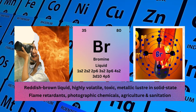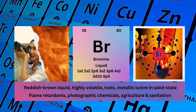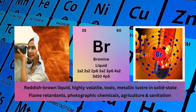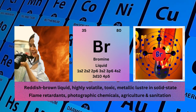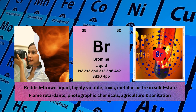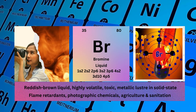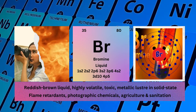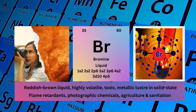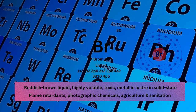Physical properties: reddish-brown liquid, highly volatile, toxic, metallic luster in solid state. Bromine used for flame retardants, photographic chemicals, agriculture and sanitation.